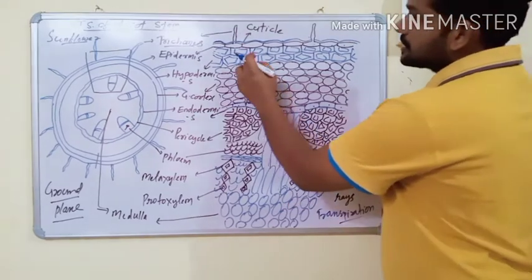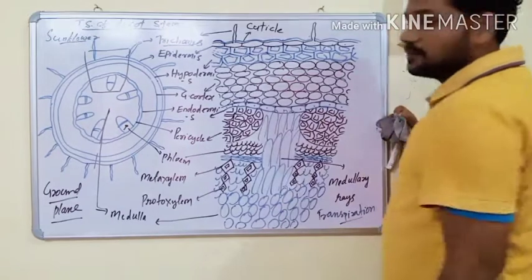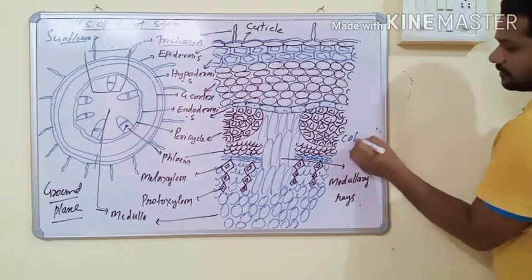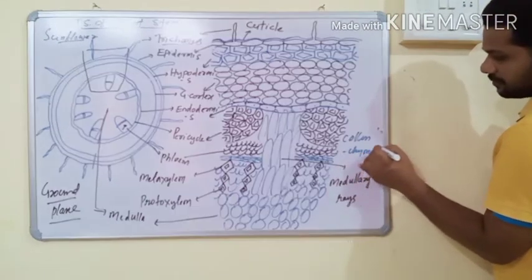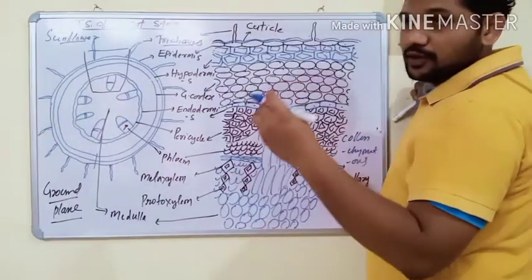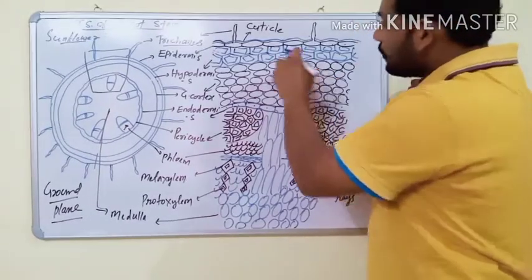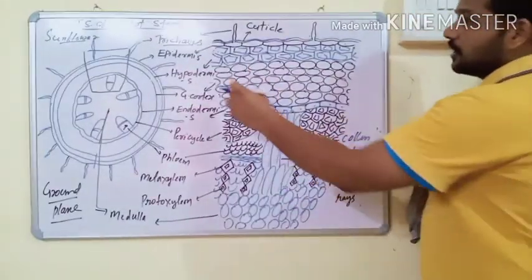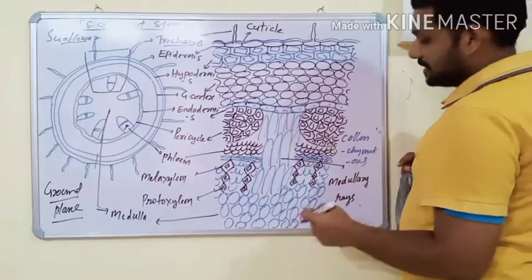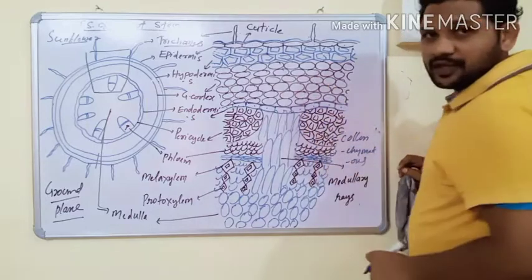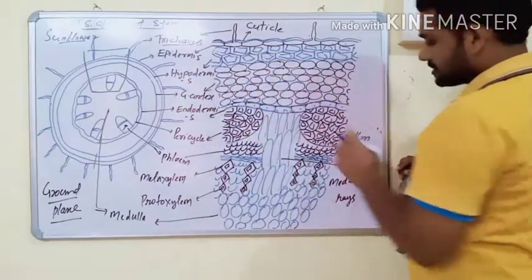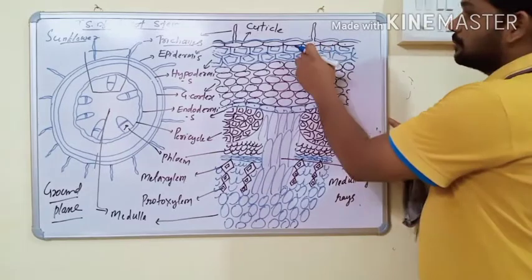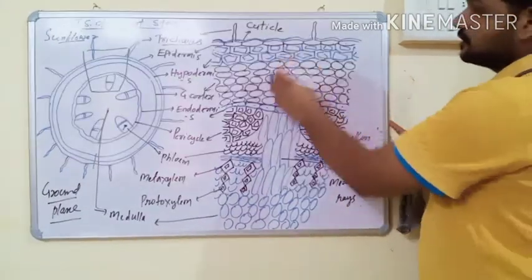The second tissue is hypodermis. This is a very important point: in dicot stem, the hypodermis is made up of collenchyma cells — one to few layers of collenchyma cells present below the epidermis is called hypodermis. The function of hypodermis is to provide mechanical support and mechanical strength to the dicot stem.